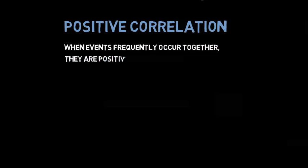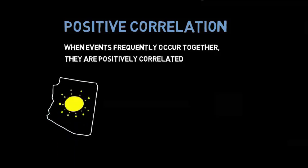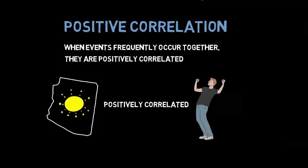When events frequently occur together, like in the examples above, they are positively correlated. If two events are positively correlated, then when one event is present the other is often present as well. In our first example, it being a sunny day in Arizona is positively correlated with Andy succeeding on his math test.